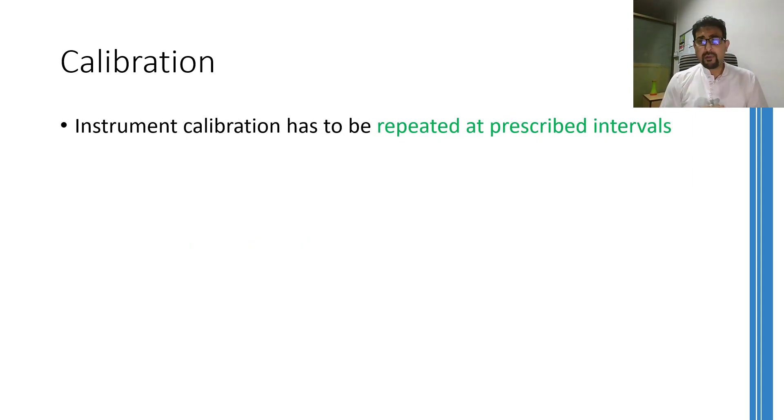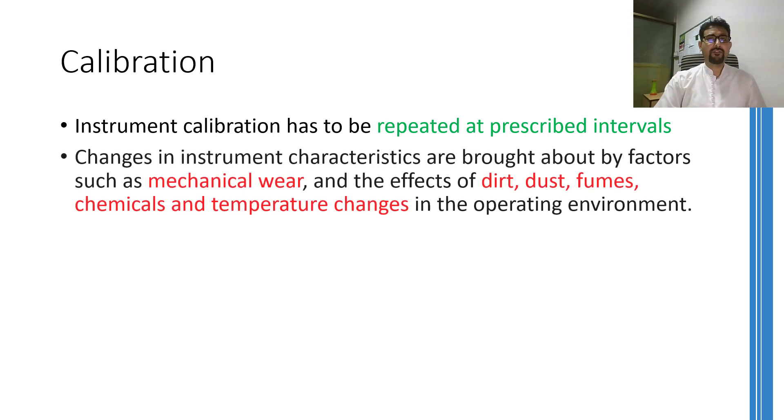Depending on the type of industry or the type of application where some instrument is being used, the calibration should be repeated at prescribed intervals because no matter how safely you are using any instrument, there are chances that its characteristics will change due to its mechanical wear, dust, fumes, changes in temperature and pressure. However, the frequency of this calibration depends on the application and should be analyzed very carefully because when you are going to check the calibration of any instrument, this means that you have to remove that instrument from the process or in some serious cases, you might have to stop the whole process. Therefore, it is not something that you can easily do on daily basis or even weekly basis.